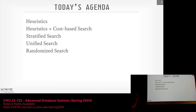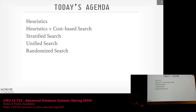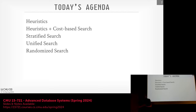Today we're going to try to get through all five different approaches to query optimization. We'll see how far we can get. If we don't get to randomized search, that's fine because nobody actually does this except Postgres, and Postgres only does it if you have 13 tables in your query. The main two we're going to focus on are the middle three — walking through them in order of complexity from simplest to hardest, although stratified and unified are essentially equivalent. We'll discuss pros, cons, what they can't handle, and how each next approach solves the problems of the previous one.